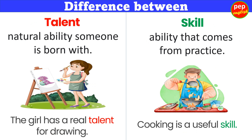Difference between talent and skill. Talent is a natural ability someone is born with. Example: The girl has a real talent for drawing. Skill is an ability that comes from practice. Example: Cooking is a useful skill.